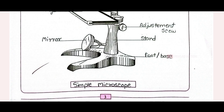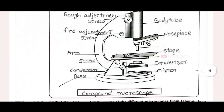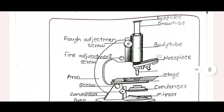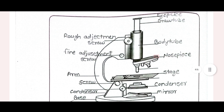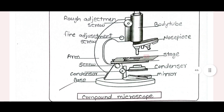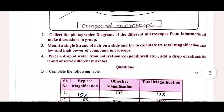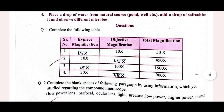Below that we have to write 'simple microscope.' Coming on the next page, we have the compound microscope — same, we have to name the parts of that compound microscope as shown in the figure, just copy and paste it, and below that write 'compound microscope.'